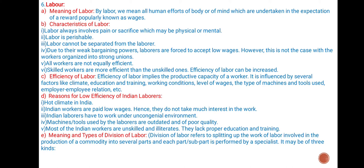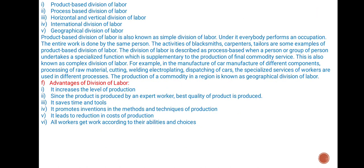Meaning and types of division of labor: Division of labor refers to splitting of the work of labor involved in the production of a commodity into several parts, and each part or subpart is performed by a specialist. It may be of three kinds: product-based division of labor, process-based division of labor, horizontal and vertical division of labor, international division of labor, and geographical division of labor. Product-based division of labor is known as simple division of labor; under it, everybody performs an occupation and the entire work is done by the same person.